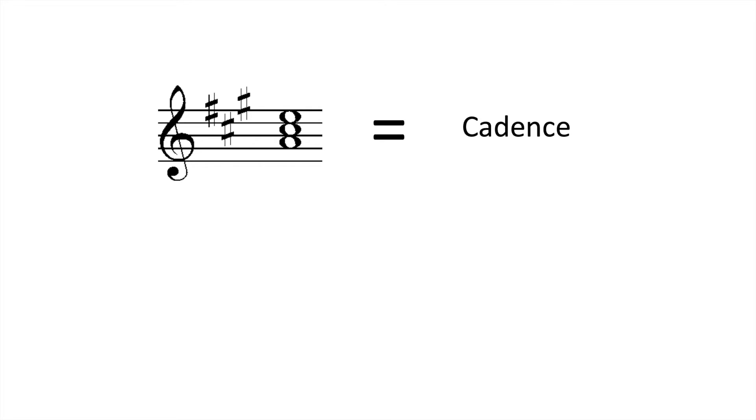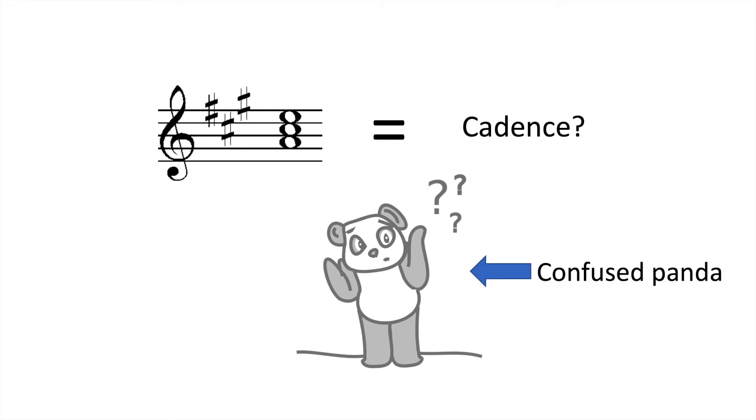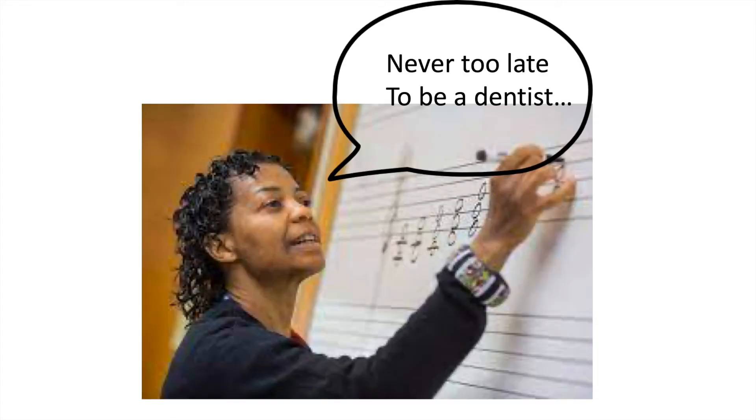The chord is considered to be a cadence, even though it does not follow any traditional cadences taught in music theory, thus once again proving that music theory is not a class you should be taking if you want to be a serious musician.